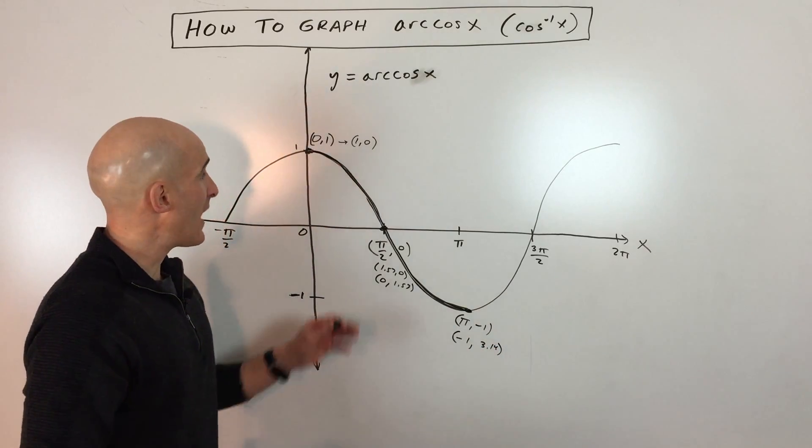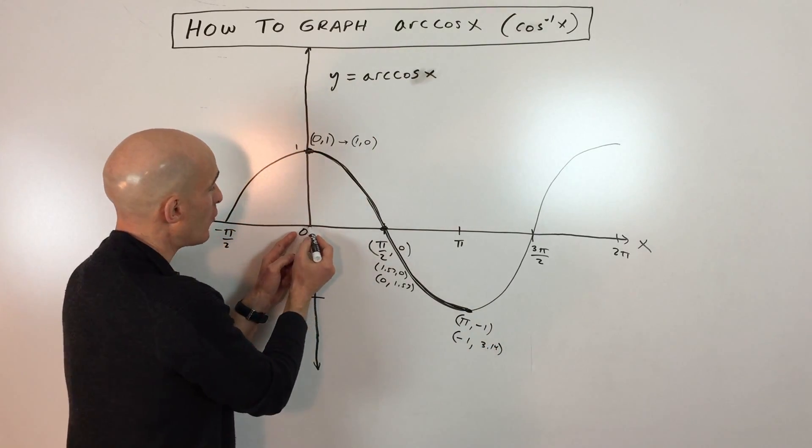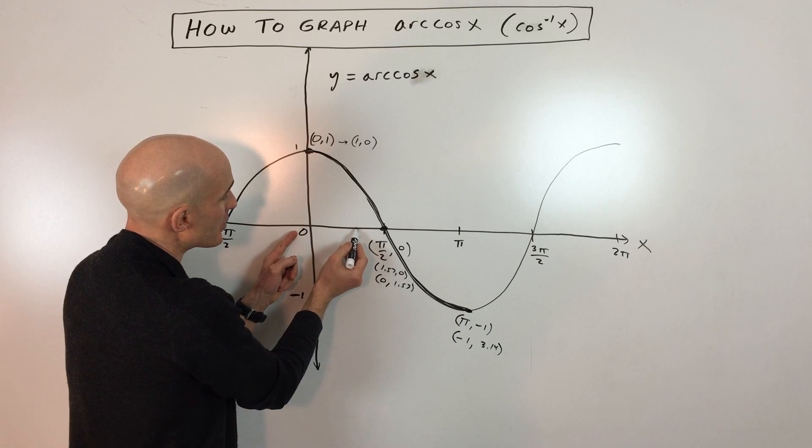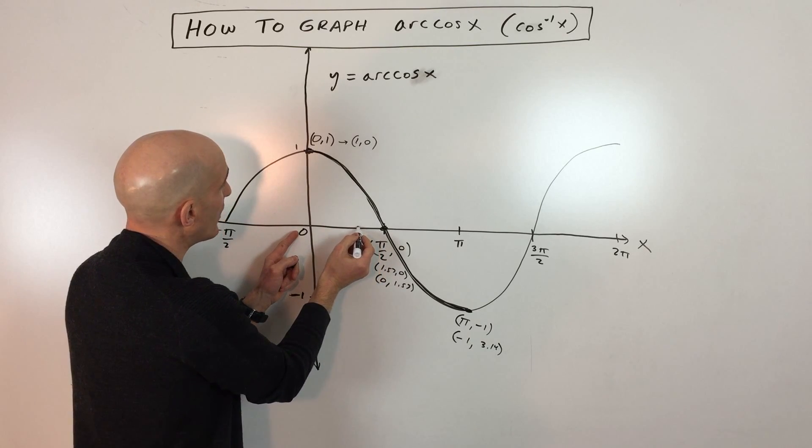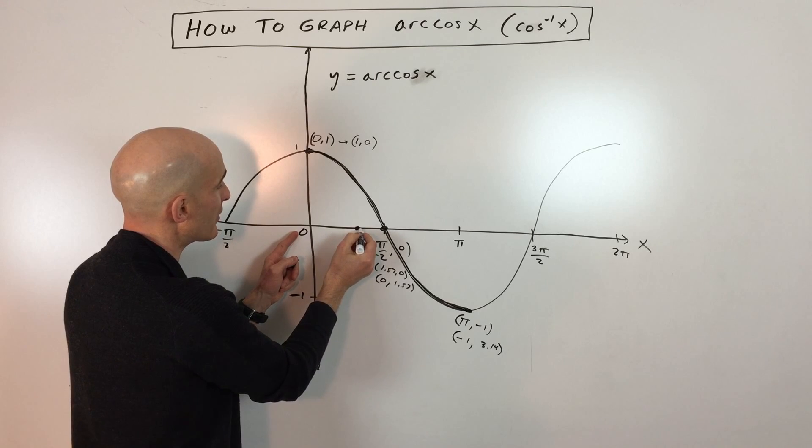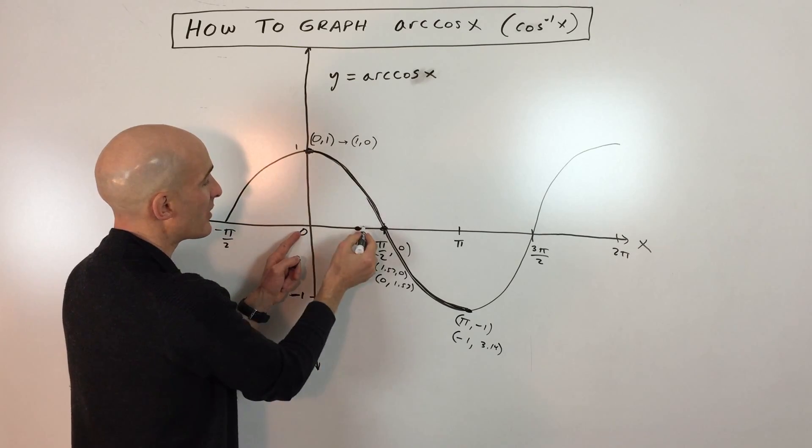So now let's plot these points. So one zero, one would be right about here, because this is 1.57. So it's about two thirds of the way, comma zero. So that's going to be right there.